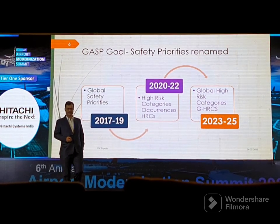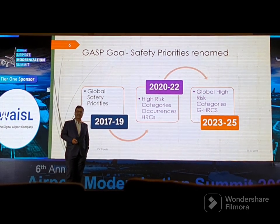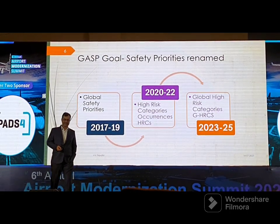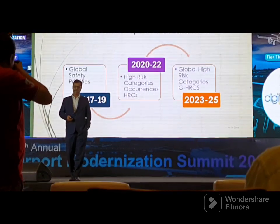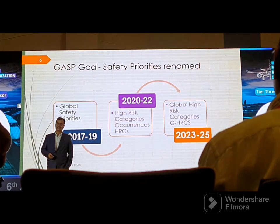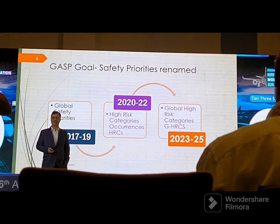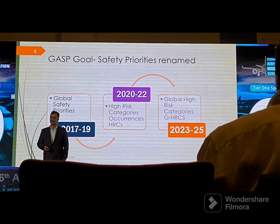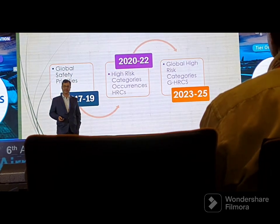Regarding Global Aviation Safety Plan safety priorities: ICAO addresses global safety priorities every one or two years. In 2017–2019 they were called Global Safety Priorities; in 2022 they were renamed High-Risk Category Occurrences, or HRCs. There was confusion between state-level and global HRCs, so in 2023–2025 global HRCs were renamed G-HRCs to make the distinction clear.